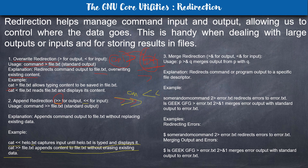Next we have merge redirection, represented by `>&`. This redirects a command's output to a specific file descriptor. Suppose you have `p > q`, it merges output from p and q. You can use `p >& q` so whatever output is coming from p and q will be merged and written to a file or displayed on the terminal.